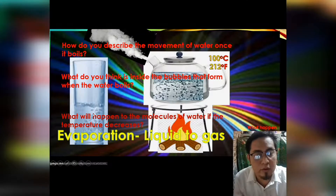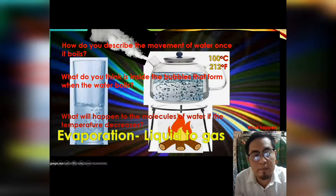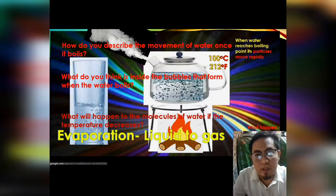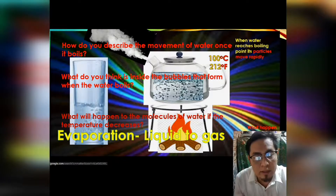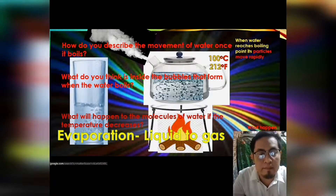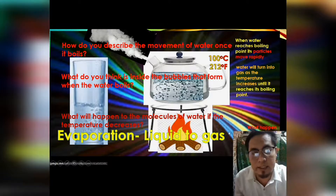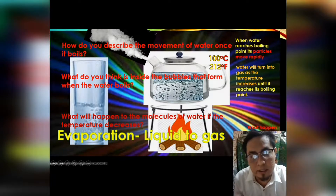This process is known as evaporation — liquid turns into gas because of high temperature when it reaches its boiling point. When water reaches the boiling point, its particles move rapidly. Water will turn into gas as the temperature increases. When it reaches its boiling point, it turns into gas. The indicator that it has turned into gas are the bubbles. When there is bubble formation, it indicates that the water is starting to reach its boiling point of 100 degrees Celsius or 212 degrees Fahrenheit.